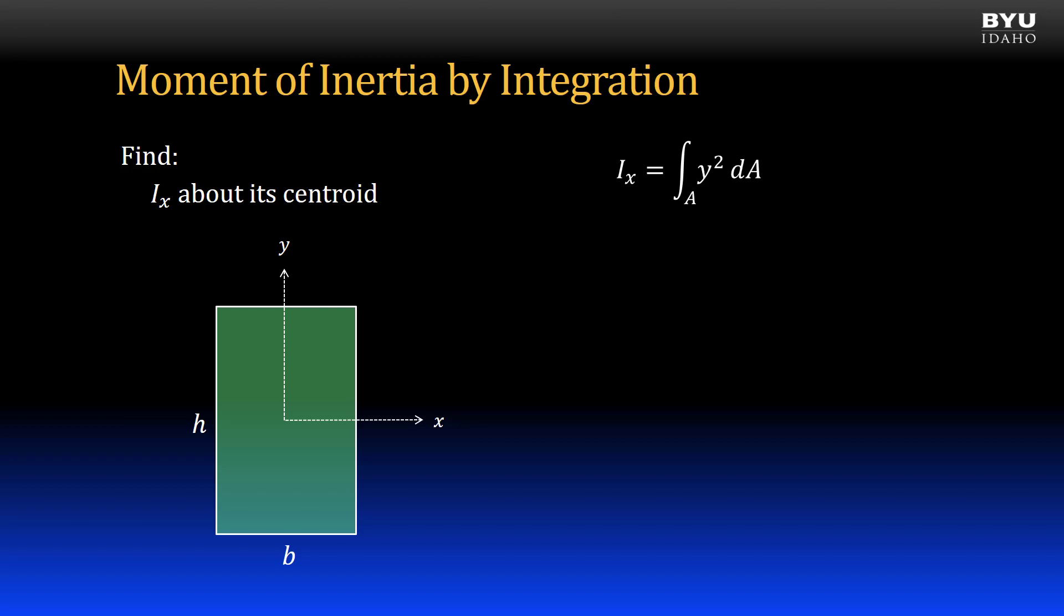Let's next identify a differential element. I will orient my element parallel to the axis of interest, so it will have a base dimension of b and a height of dy. So the area of my differential element, dA, is b times dy. I substitute that into my equation. Now b is a constant, so we can pull it outside of the integral.